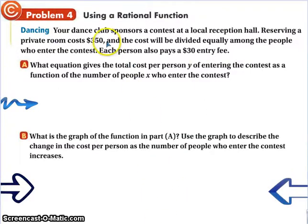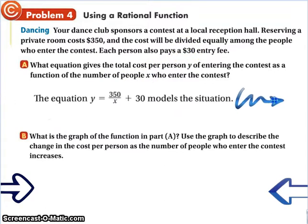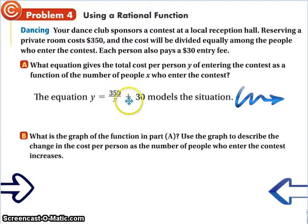So, word problem. Your dance club sponsors a contest at a local reception hall. Reserving a private room costs $350. And the cost will be divided equally among the people who enter the contest. So, depending on how many people. Now, they're also going to pay a $30 entry fee. So, what equation gives the total cost? So, the total cost is Y. And the number of people coming is X. So, we're going to take $350 divided by X. Add $30. And that's going to give us Y. So, here is the equation. Y is equal to $350 over X plus $30.